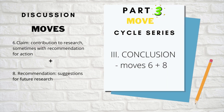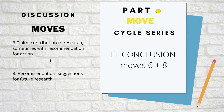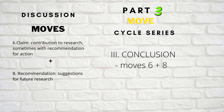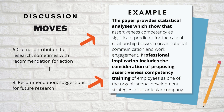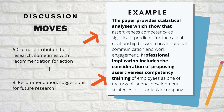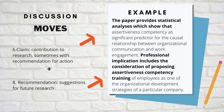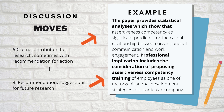For the third part of the framework — the conclusion — the first combination is move six plus eight: claim, plus recommendation or suggestion for future research. For example: 'The paper provides statistical analysis which shows that assertiveness competency is a significant predictor for the causal relationship between organizational communication and work engagement. Professional implication includes the consideration of proposing assertiveness competency training of employees as one of the organizational development strategies of a particular company.'